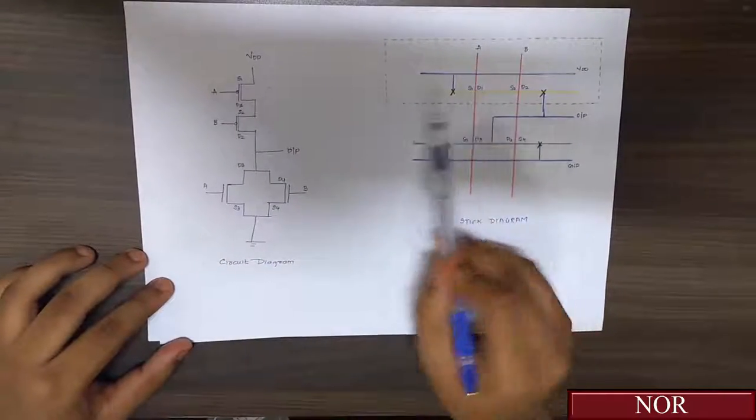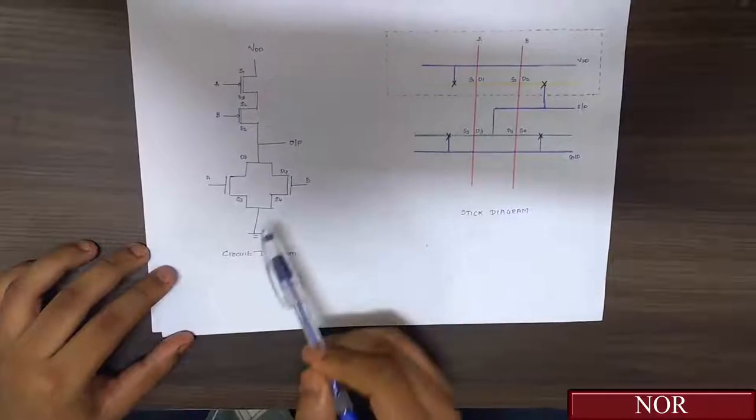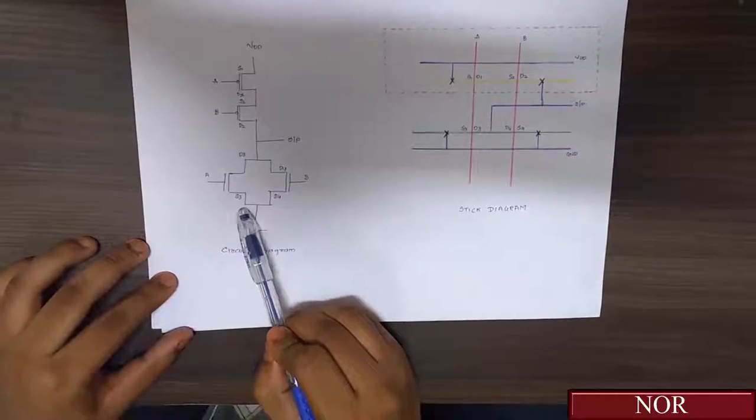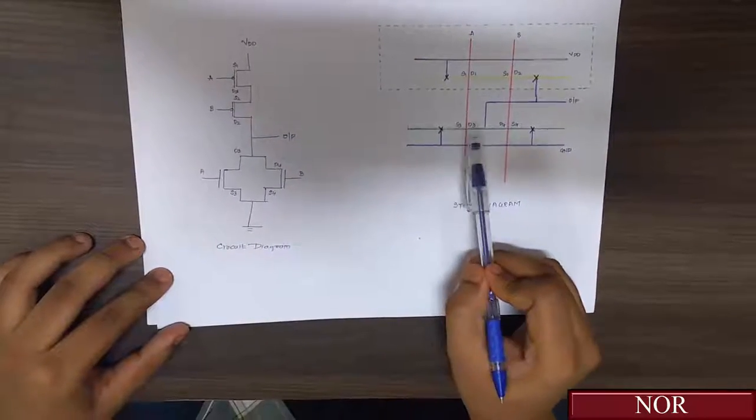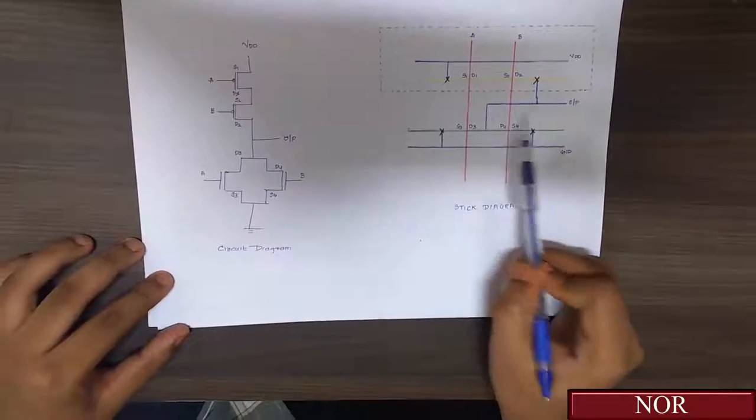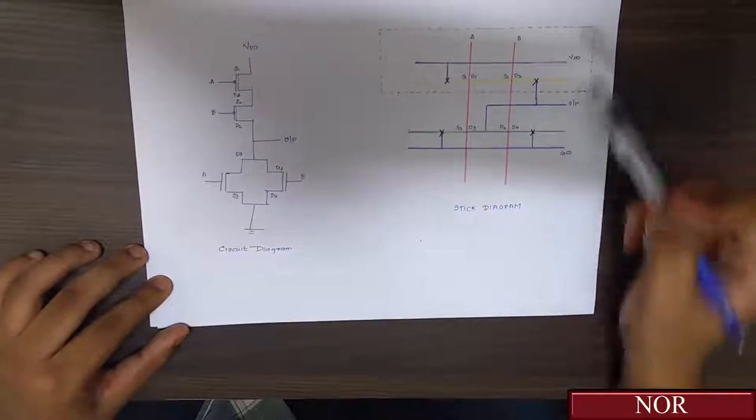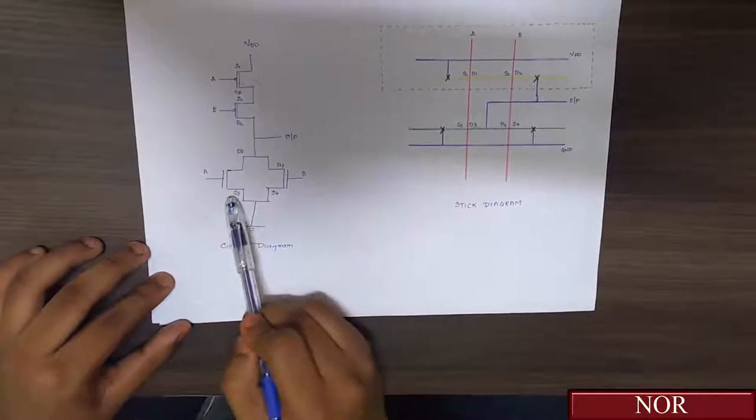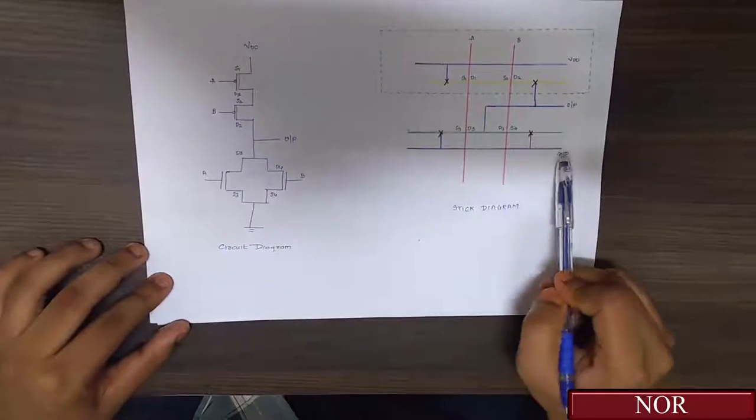So it is written as S1 D1 S2 D2 and the same in NMOS. The direction is from A to B, so it is written S3 D3 D4 S4. Now the VDD is given to S1, and the ground is given to S3 and S4. So S3 and S4 through the contact ground is given.